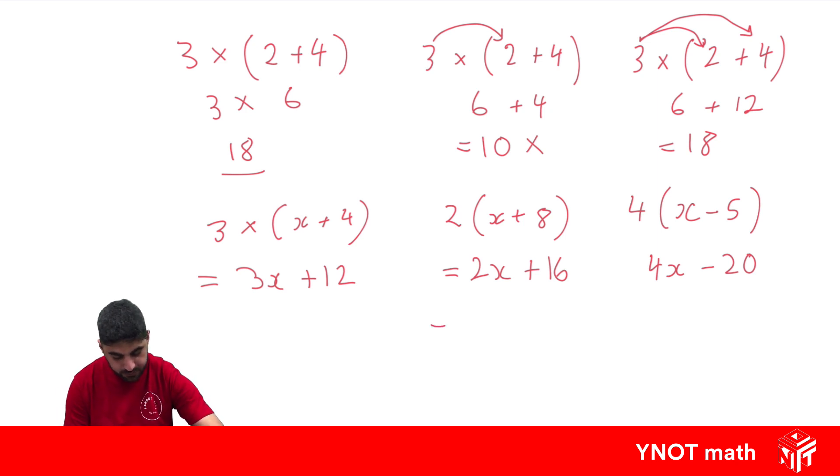One more. Minus 6 outside of x minus 7. This time we've got a minus term out the front. So when we multiply, we include the minus term with the 6. So it's negative 6 times x, which gives us negative 6x. Then we've got negative 6 times negative 7. And a negative times a negative gives us a positive.